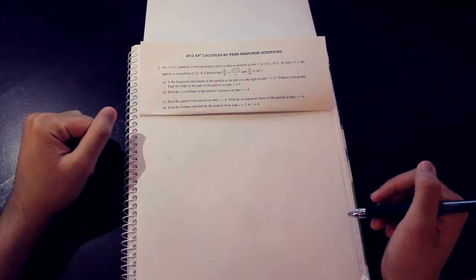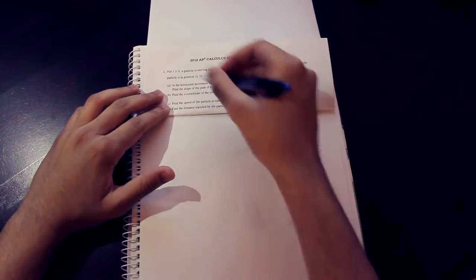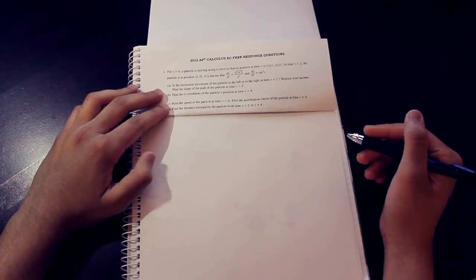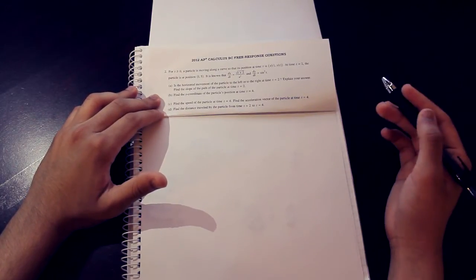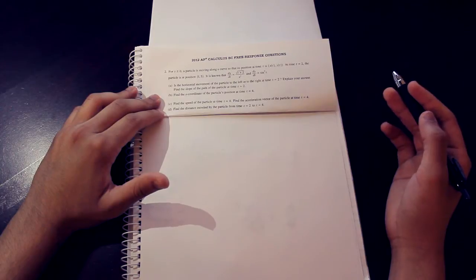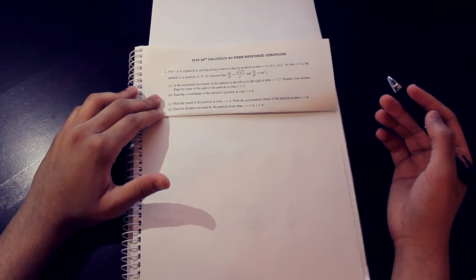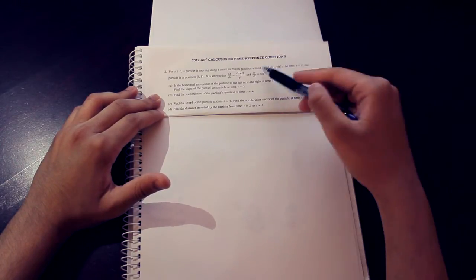Alright, anyway, let's see what we got. It says some things here, but nobody really cares about that until you actually look at what you're trying to find. So let's look at part A. It's asking if the horizontal movement of the particle is to the left or to the right at time 2, and telling us to find the slope of the path of the particle at the same time. Now, since I have absolutely no idea what that means, let's go back and actually read the introduction to the problem.